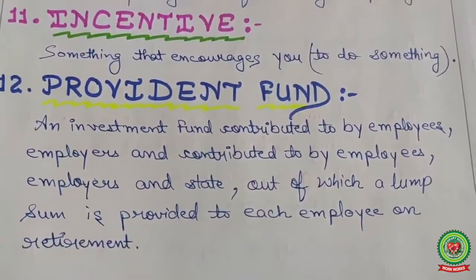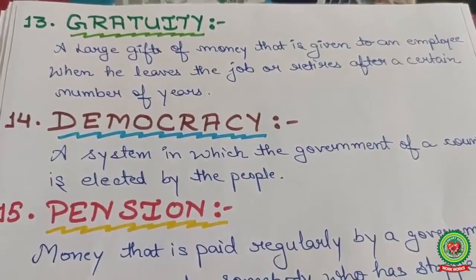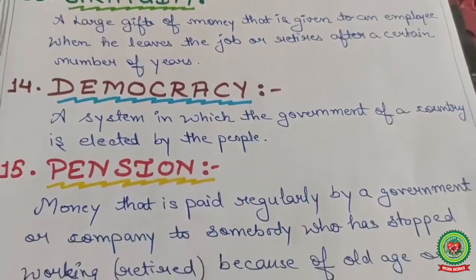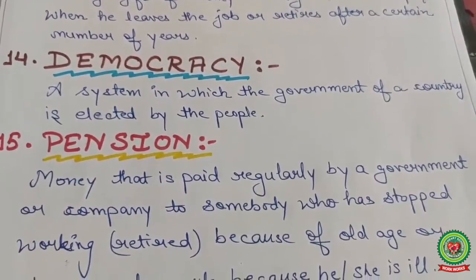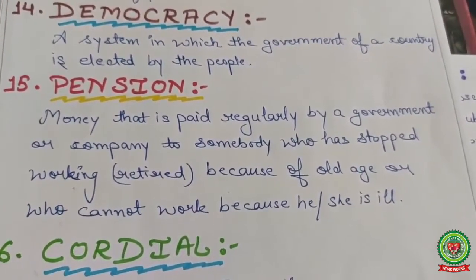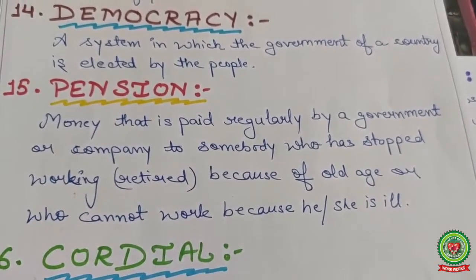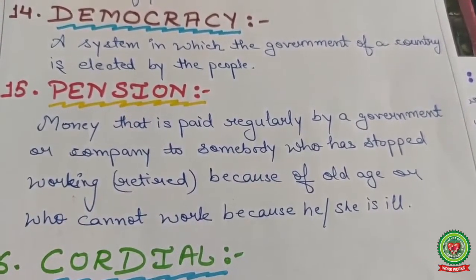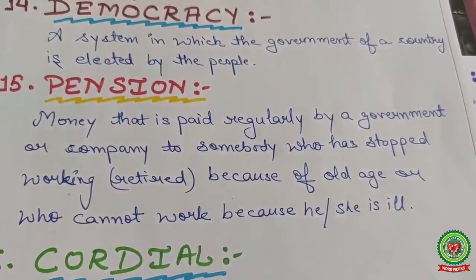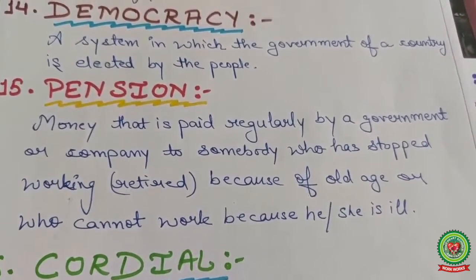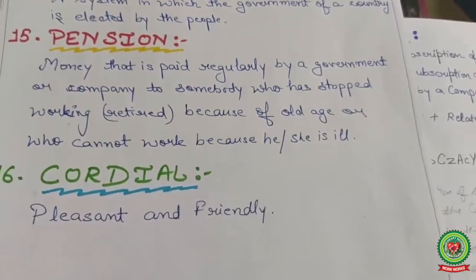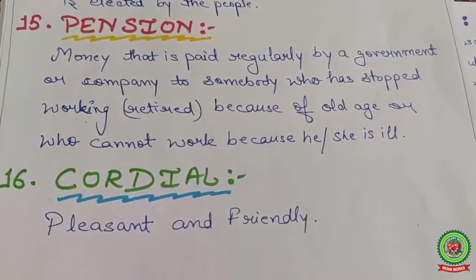Thirteenth: gratuity — a large gift of money given to an employee when he leaves the job or retires after a certain number of years. Fourteenth: democracy — a system in which the government of a country is elected by the people, like India. Fifteenth: pension — money paid regularly by a government or company to somebody who has stopped working due to old age or illness. Sixteenth: cordial — pleasant and friendly.